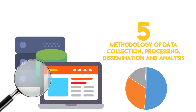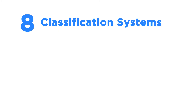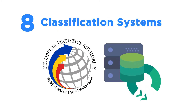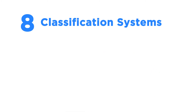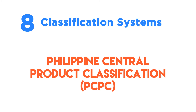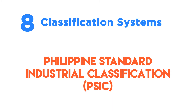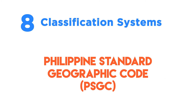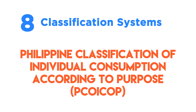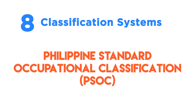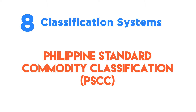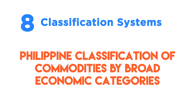In the Classification Systems of the PSS, eight classification systems are currently being maintained and updated by the PSA. These are the Philippines Central Product Classification, Philippines Standard Classification of Education, Philippines Standard Industrial Classification, Philippines Standard Geographic Classification, Philippines Classification of Individual Consumption According to Purpose, Philippines Standard Occupational Classification, Philippines Standard Commodity Classification, and the Philippines Classification of Commodities by Broad Economic Categories.